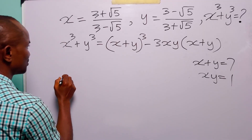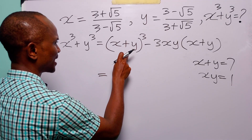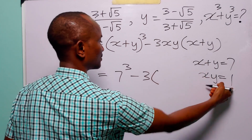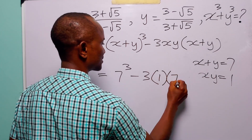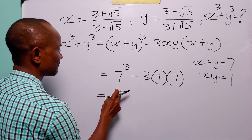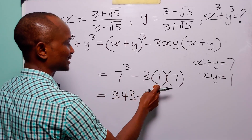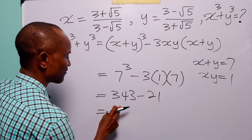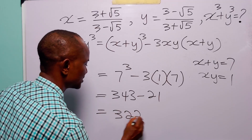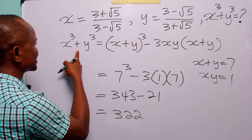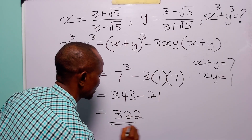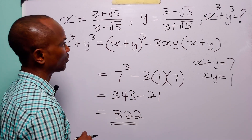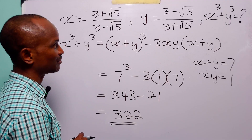Now let us find the value of x cubed plus y cubed. This is going to be x plus y cubed minus 3 times xy times x plus y, which is 7 cubed minus 3 times 1 times 7. 7 cubed is 343, and 3 times 1 times 7 is 21. 343 minus 21 is 322. So the value of x cubed plus y cubed is equal to 322, when x equals 3 plus root 5 over 3 minus root 5 and y equals 3 minus root 5 over 3 plus root 5.